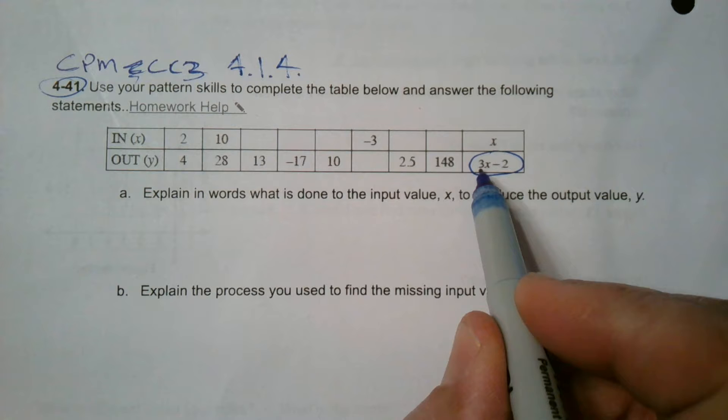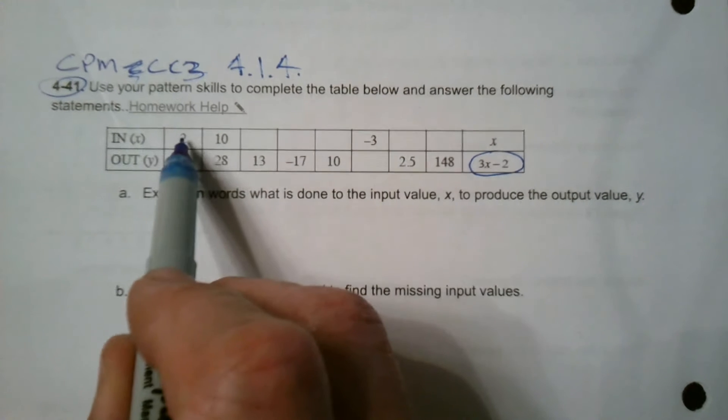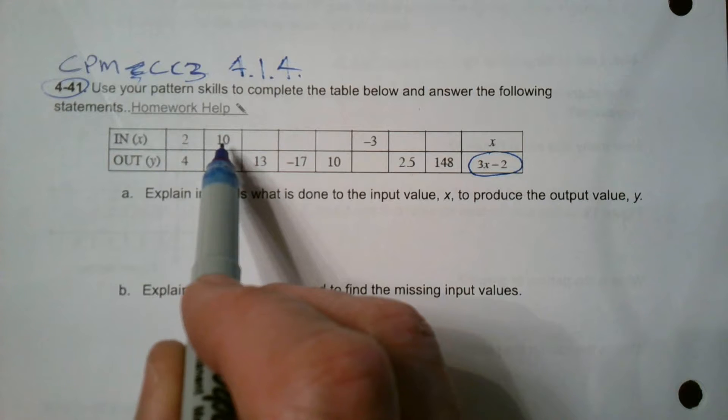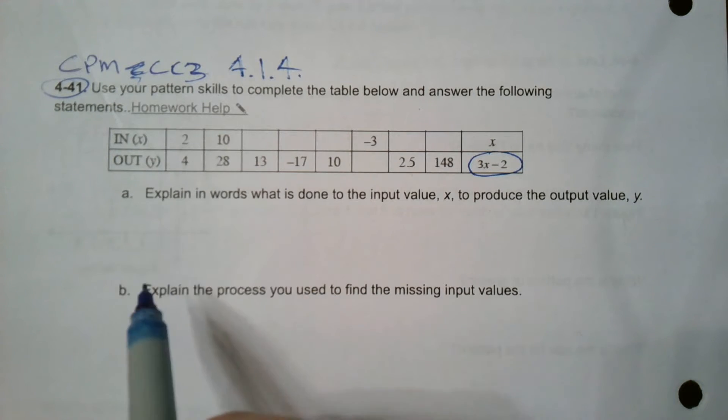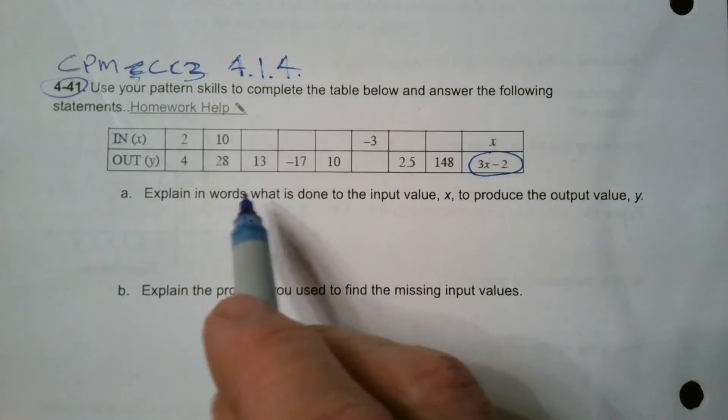Let's check it. So they're saying multiply three times the X and then subtract two, and that's what you're going to get for the Y. So if I say three times two is six minus two is four, sure enough. Three times 10 is 30 minus two is 28. Yeah, that is the rule.